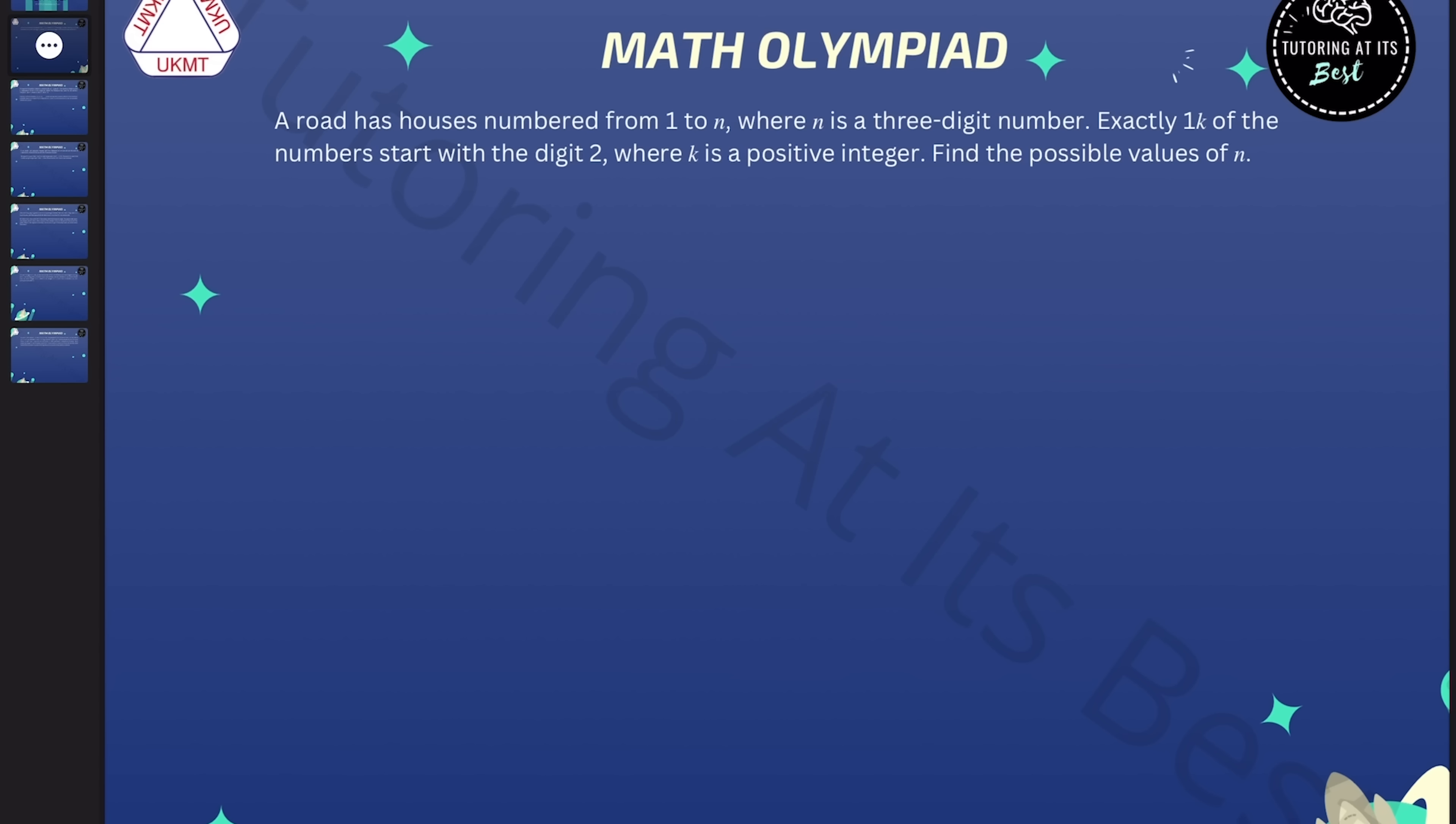We're told that n, the number of houses, is a three digit number. Let's start with the smallest value that n could be. So let's say there's 100 houses. If the houses start with a digit 2,